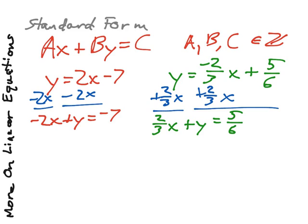And then I need to get rid of my fractions. So what's the lowest common multiple of our denominators 3 and 6? And that is 6. And we'll multiply this entire equation by 6. 2/3 times 6 is 4. So I have 4x + 6y = 5. I now have an equation written in standard form.